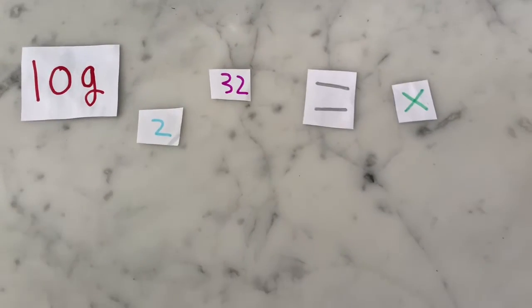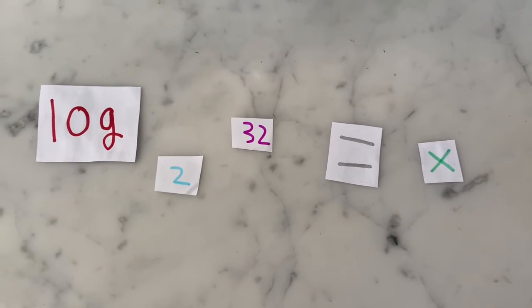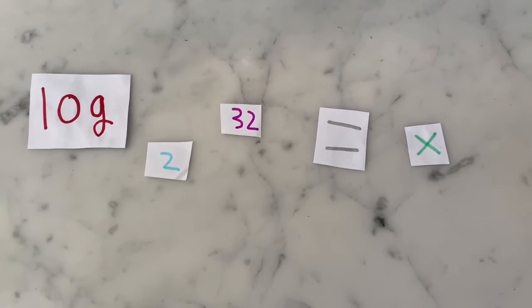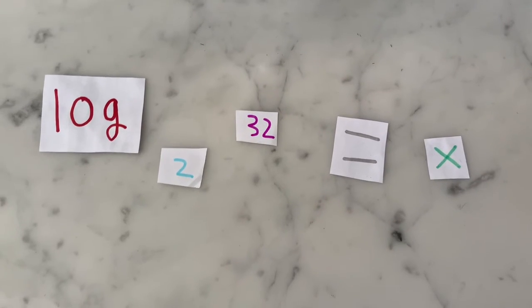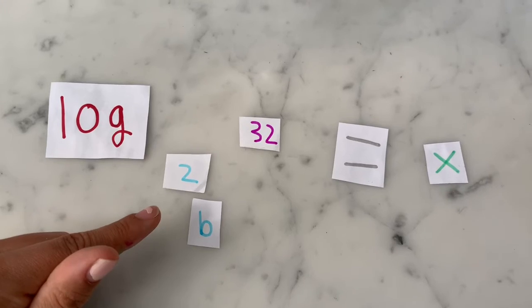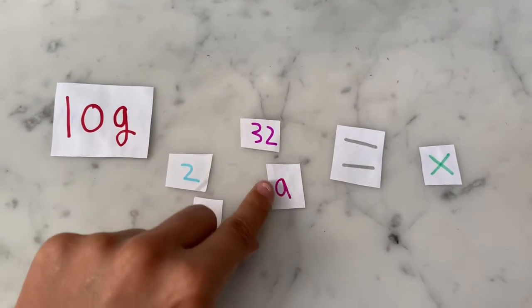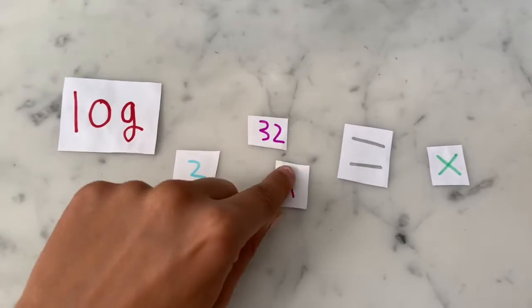The first step to rearranging logarithmic equations is to assign each number a variable. So the base will have a variable of b. The logarithm will have a variable of a, because when rearranged, this will be the answer.